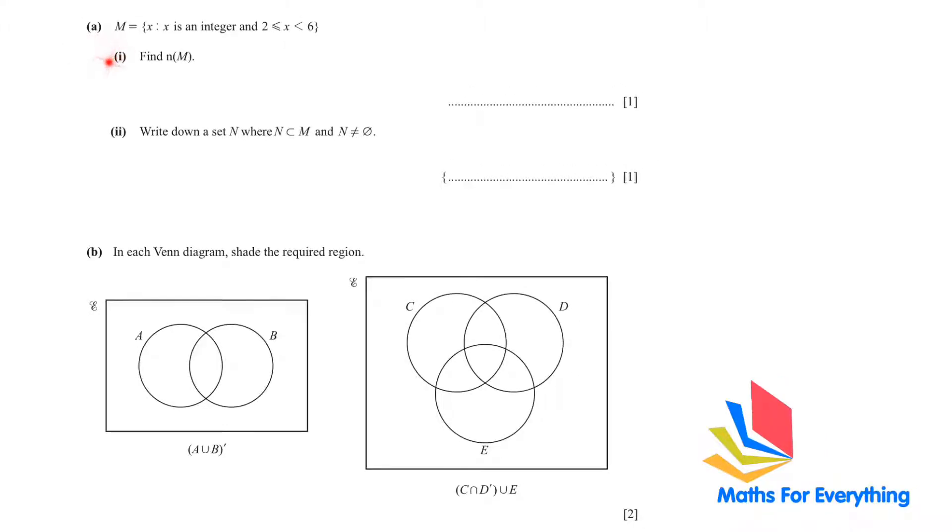Part A. M is equal to x, x is an integer and x is more than or equal to 2 and x is less than 6. Let's write the set M. So M is equal to 2, 3, 4 and 5. We took the element 2 because it's an equal sign here. We did not write 6 because it is only less than 6, so we cannot take 6.